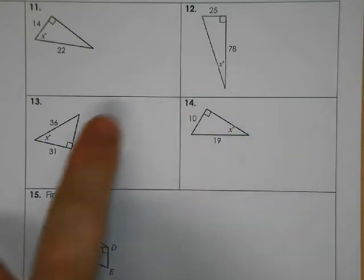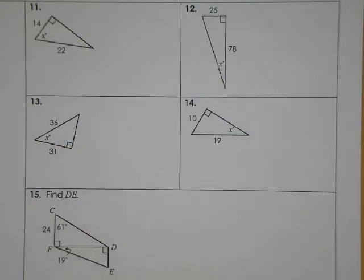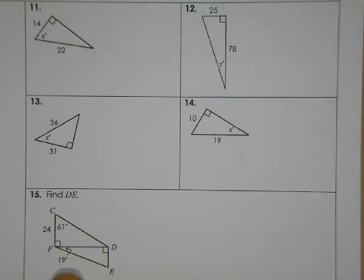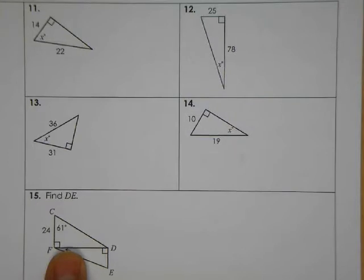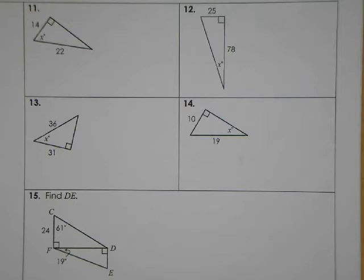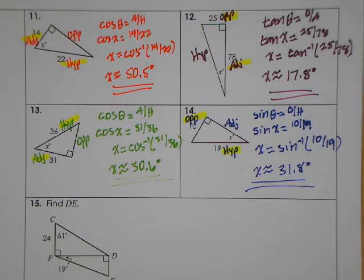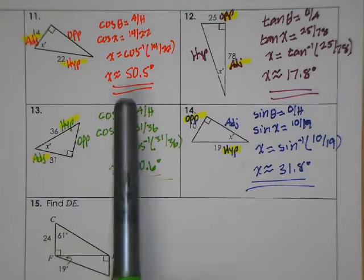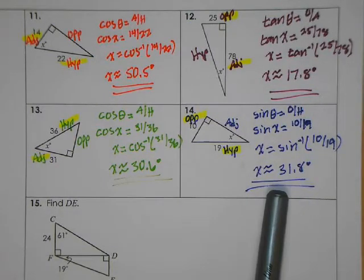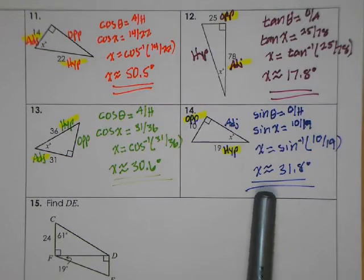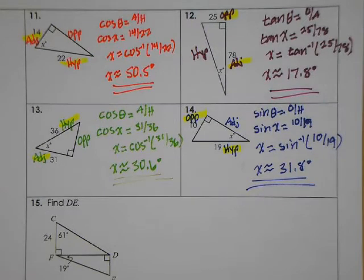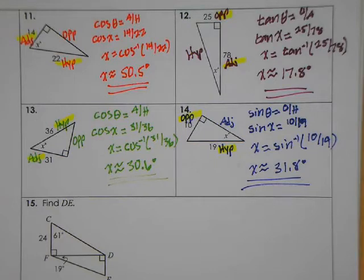For the next five problems, try working them out on your own — we're looking for angle measurements, so we'll use inverse sine, cosine, or tangent. Go ahead and stop at 14; I'll work out 15 for you because it's the first example where we'll need to use an answer for a future calculation. Work out 11 through 14, then hit play. The answers are: 50.5, 17.8, 30.6, and 31.8 degrees. Make sure you identify your ratios correctly based on the sides given.